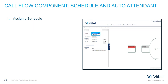If you do not assign an on-hours schedule, the call flow component functions 24 hours a day, 7 days a week. This may be fine for an internal auto attendant whose call flow functionality is independent of the time of day or day of week. Holiday and custom schedules will still override a 24-hour schedule in this situation.